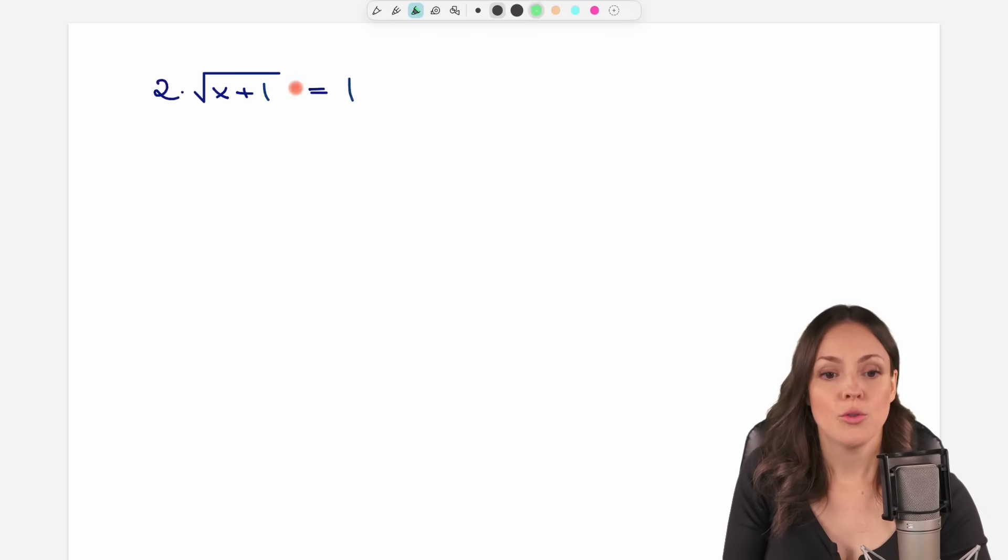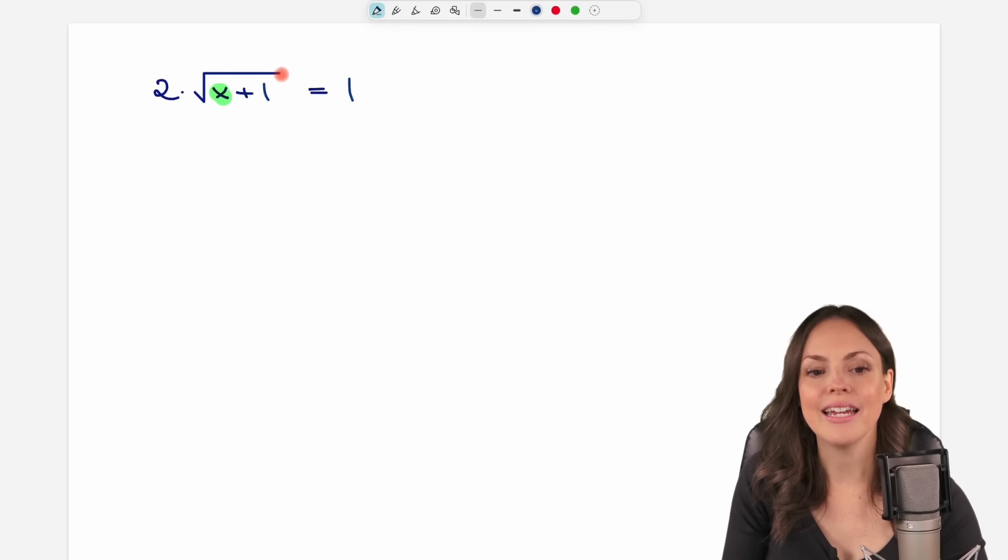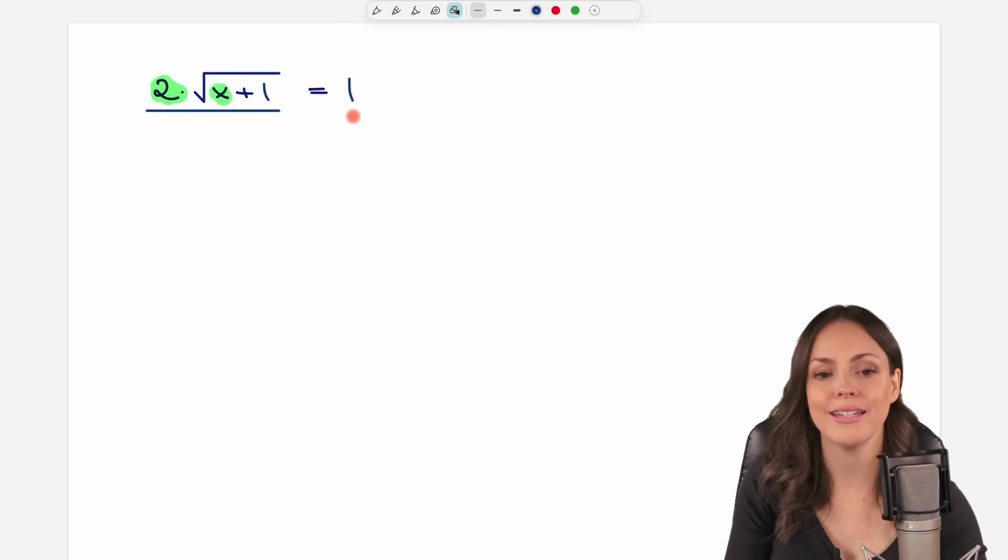I want to solve for x. My x right now is inside this square root, and in front of my square root I have this 2 times, so maybe we first get rid of this 2 by dividing both sides of the equation by 2. This cancels out, and only my square root is left with x plus 1. On the other side I have 1 over 2.